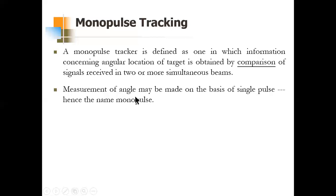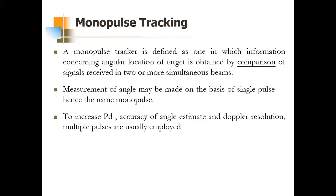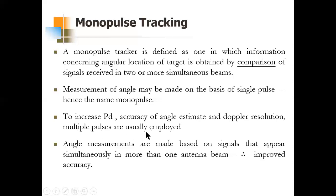The name 'monopulse' comes from the fact that initially a single pulse was used — the measurement of angle was made on the basis of a single pulse. In practical scenarios, however, we use multiple pulses. In practice, multiple pulses are used because, for one angle coordinate requiring two simultaneous beams, we need to increase the probability of detection, the accuracy of the angle estimate, and the resolution in Doppler wherever necessary. These angle measurements are made based on the echo signals appearing in those two beams.